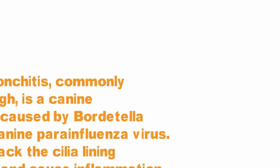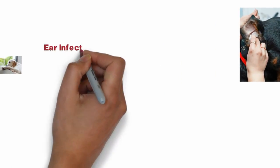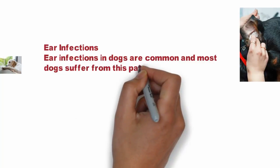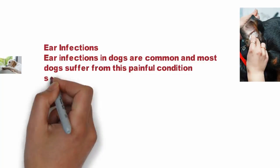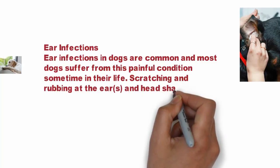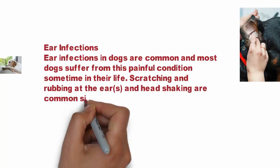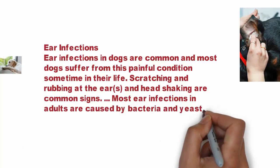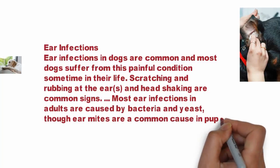8. Ear Infections. Ear infections in dogs are common and most dogs suffer from this painful condition sometime in their life. Scratching and rubbing at the ears and head shaking are common signs. Most ear infections in adult dogs are caused by bacteria and yeast, though ear mites are a common cause in puppies.